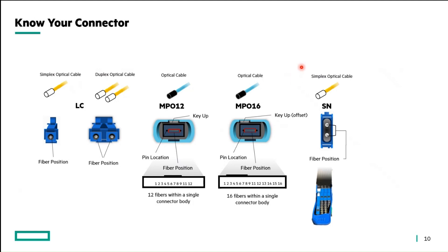Recently, another connector was introduced: the SN connector. It is very similar to the LC connector since it uses similar optical cable, but it is actually very small compared to the LC connector, and the fiber positions are aligned vertically rather than horizontally as in LC connectors. The last connector type is RJ45, which works with your Ethernet copper cables.